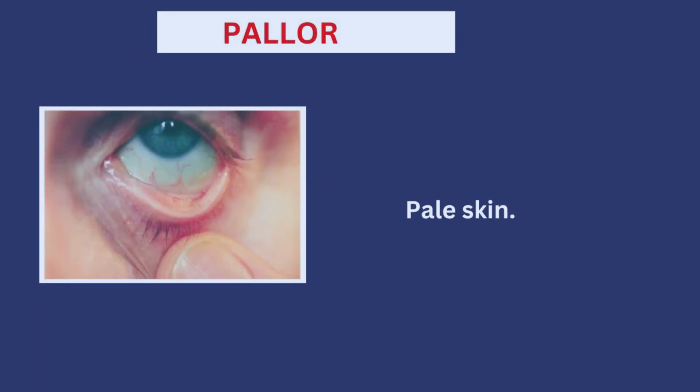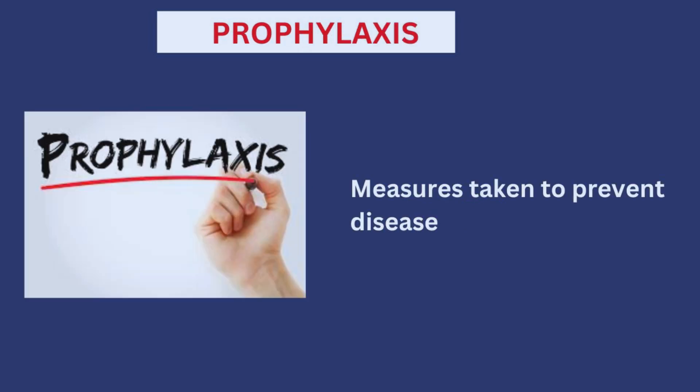The next word is pallor. When I first heard this word, what came to my mind was my father's sitting room — but the spelling is obviously different, even though the pronunciation seems similar. Pallor in the hospital simply refers to when the patient's skin is pale, and this is one of the major signs of anemia.